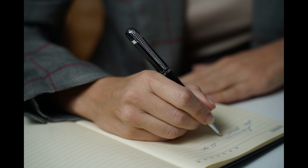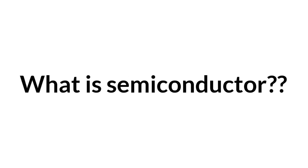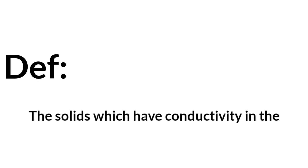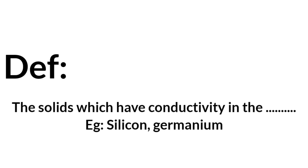If a definition is asked, definitely mention an example. For example, for the question 'What is a semiconductor?' - first write the semiconductor definition, then write an example. Like: 'The solids which have conductivities in the intermediate range of 10 to the power minus 6 to 10 to the power 4 are called semiconductors. Example: Silicon, Germanium.' That's enough.